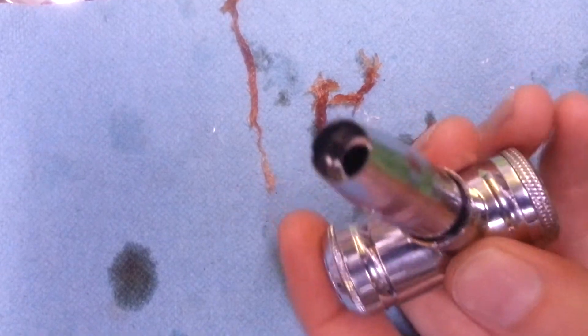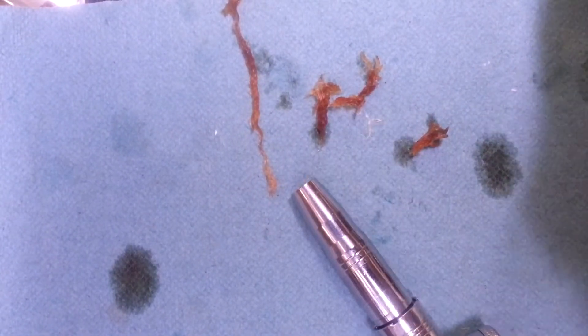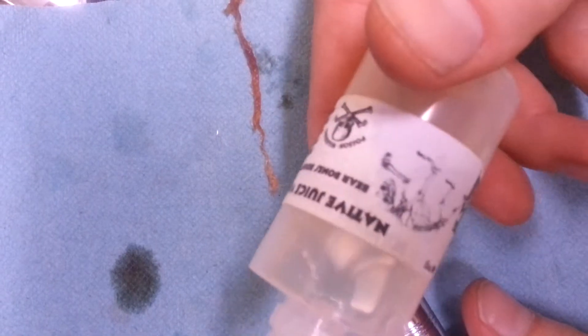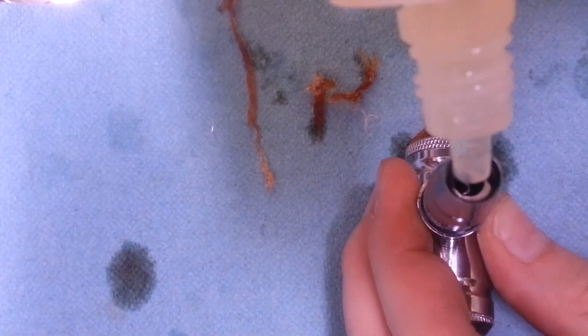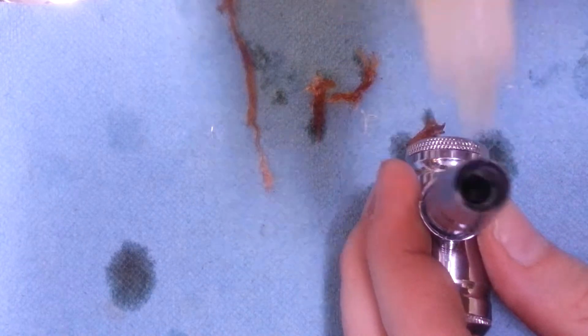Let me give it a vape real quick, see if everything's working. Let me drip some, I got some bare bones here. Yeah, there's some bare bones bounty. I'll drip that down in there. What's great about this atomizer is you can just pour like 20 drops in it.